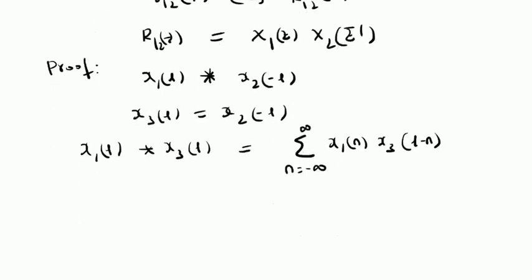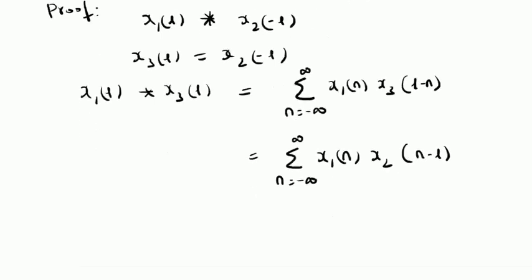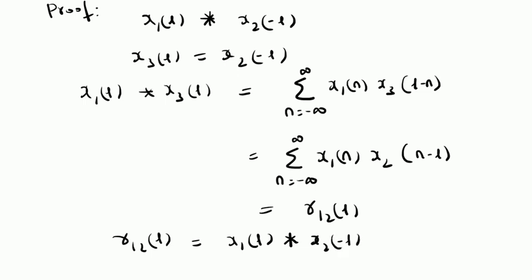That is the definition of this convolution. Since X3 of L is X2 of minus L, they are related by time reversal. So we can rewrite this summation as: summation n equal to minus infinity to plus infinity of X1 of n, and replacing X3 with X2, we have X2 of n minus L. If you look at this summation, it is nothing but the definition of correlation R12 of L. Therefore, R12 of L — that is, correlation — is defined as the convolution of X1 of L with X2 of minus L. It is a convolution between the first signal and the time-reversed second signal.